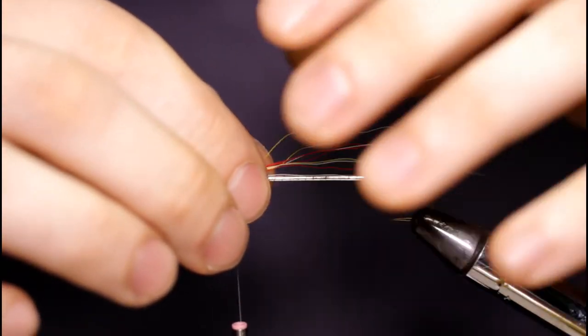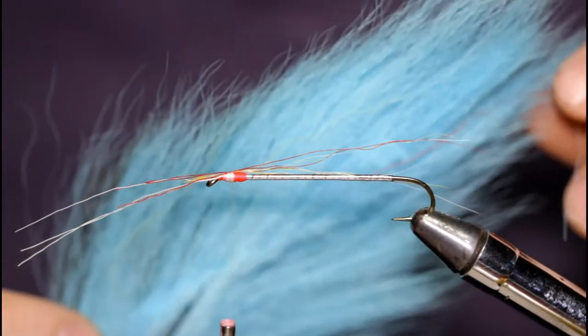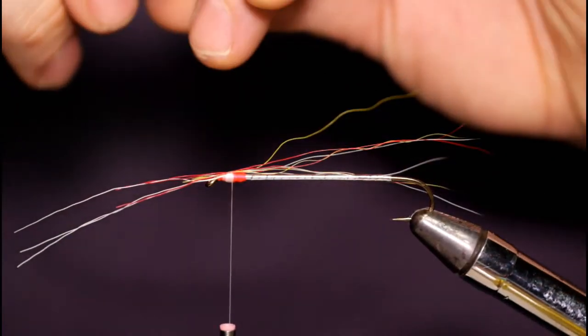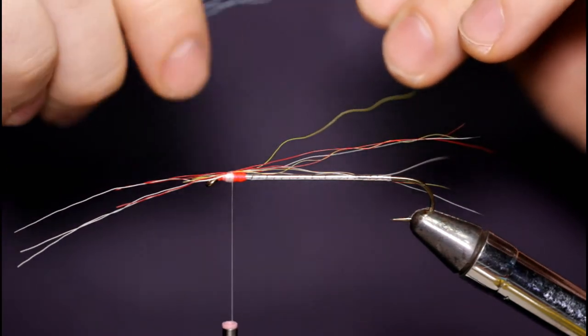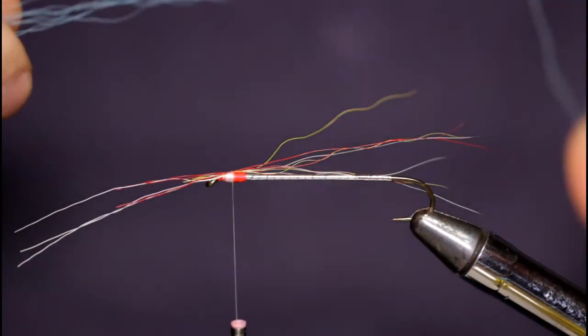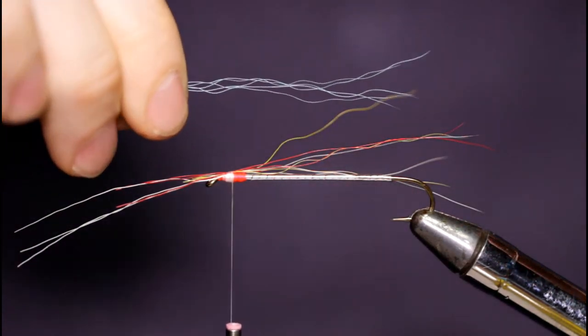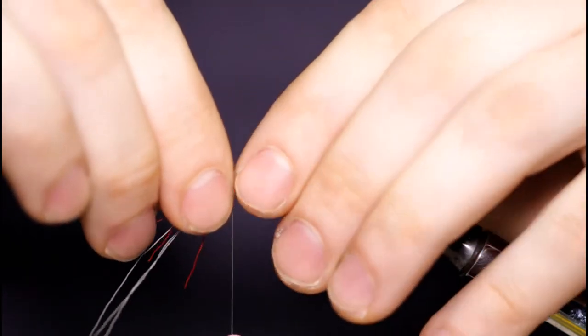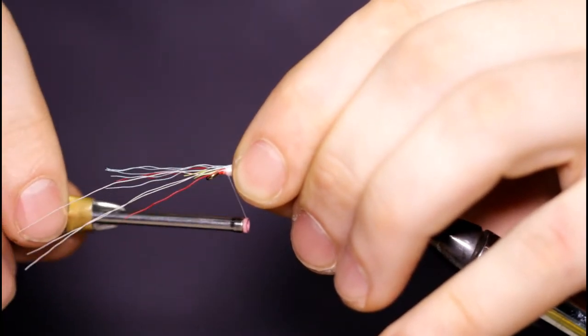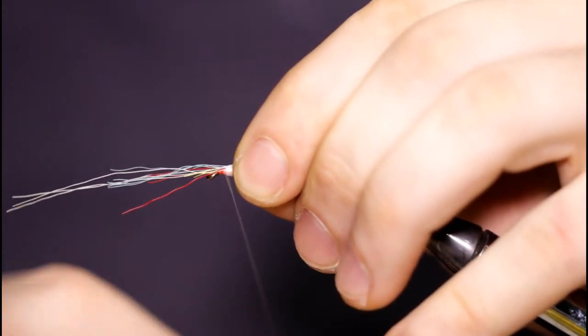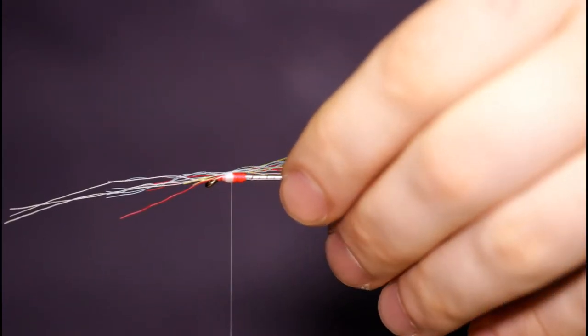We're halfway done with this bucktail. Now I'm going to grab some blue, this is actually a Kingfisher blue dyed bucktail. Same thing as before, just thinning this clump out. Looks like I've got a few more of these blue fibers than I did the previous colors, but that's okay. I'll get this tied in.